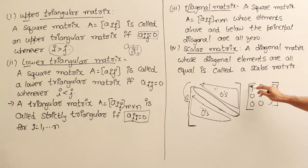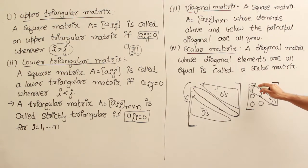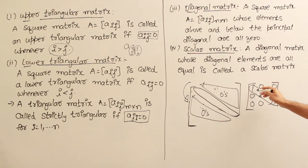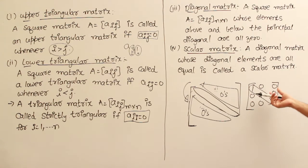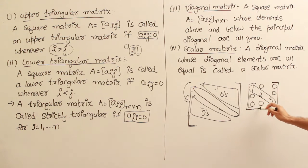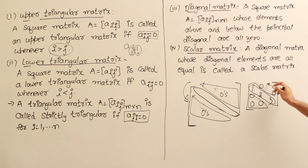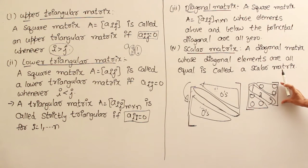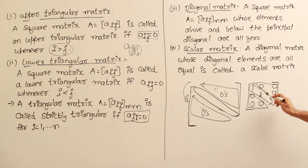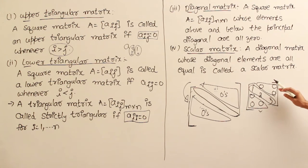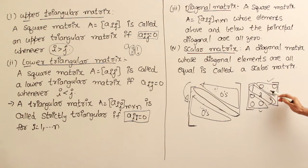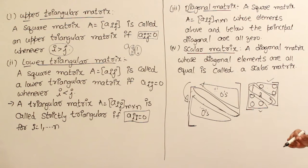All the elements above and below the principal diagonal are all zeros. Even if the diagonal elements are all zeros, we can still call it a diagonal matrix, but the main concern is the elements below and above. So this diagonal matrix also happens to be an upper triangular matrix because elements below the principal diagonal are all zeros, and it also happens to be a lower triangular matrix because elements above the principal diagonal are zero. Therefore a diagonal matrix is both upper triangular as well as lower triangular.